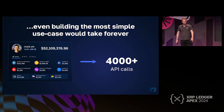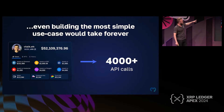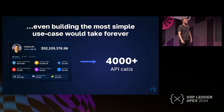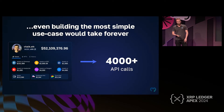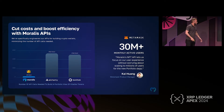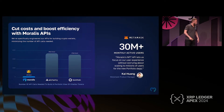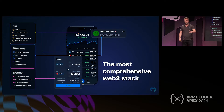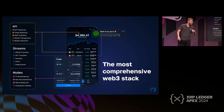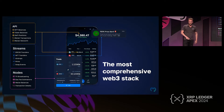We boiled this down into a graphic: even building the simplest use case — taking Vitalik's wallet and getting all of his assets on EVM — with traditional providers takes about 4,000 API calls because it's a large wallet. With Morales, we reduced that to about 18 API calls to get all of that. That's why we've been having a lot of success with major wallets. But this presentation is not about our APIs — it's about how we built the market motion.